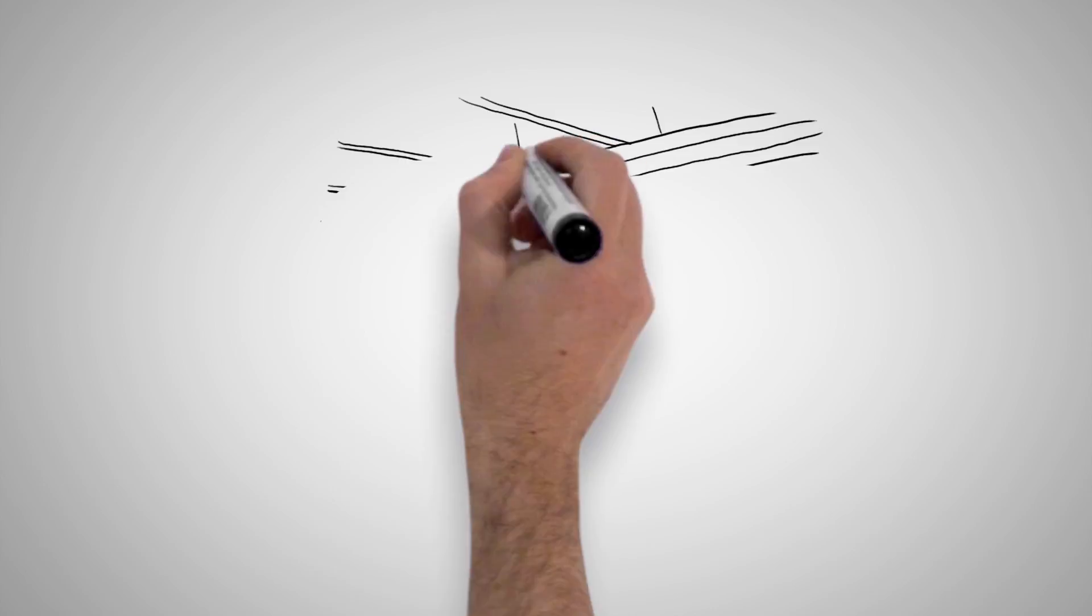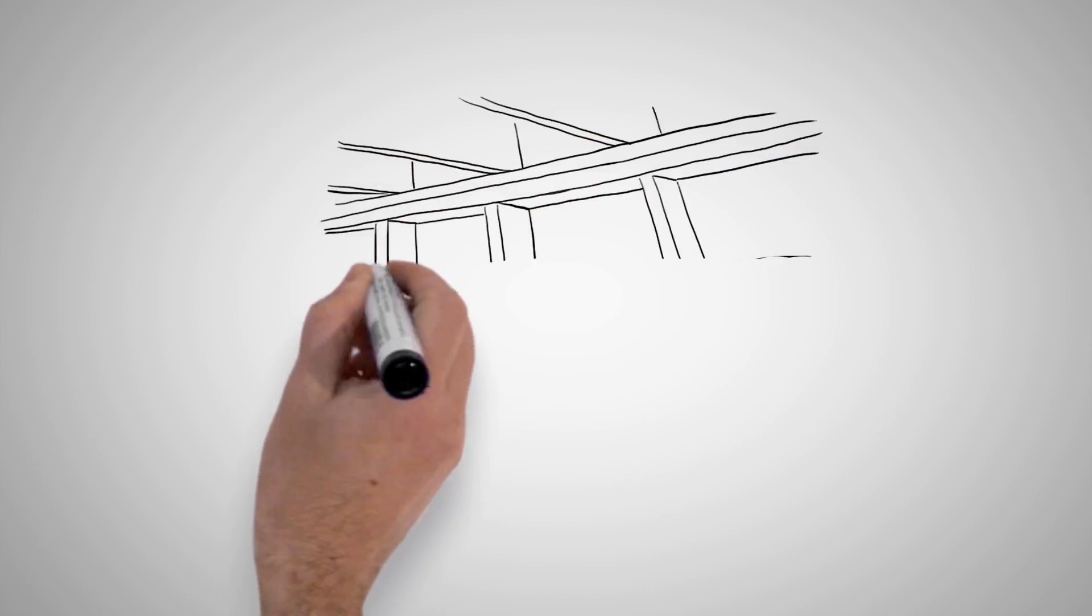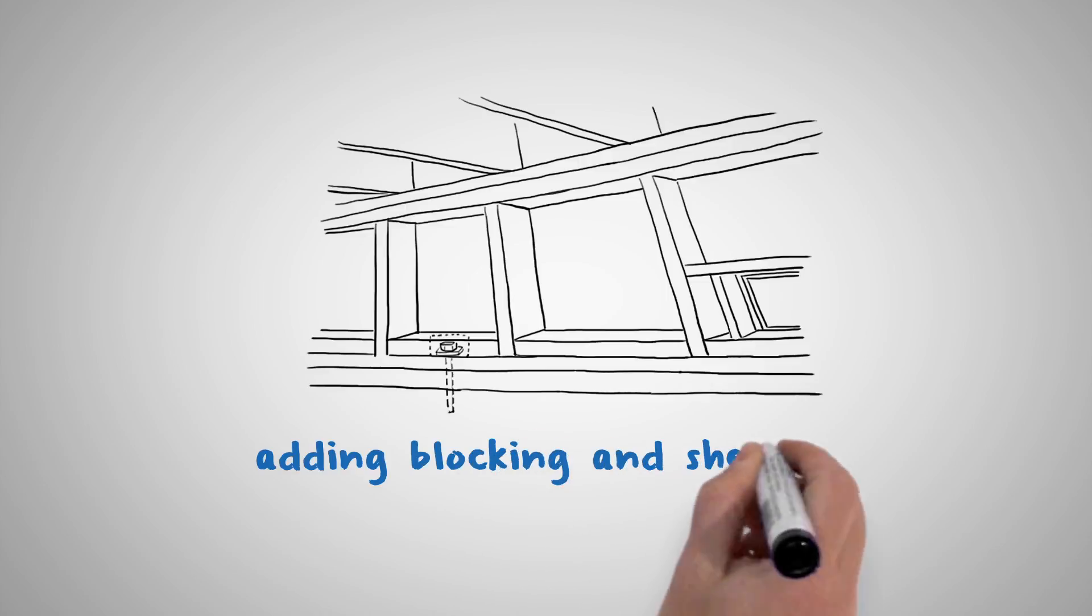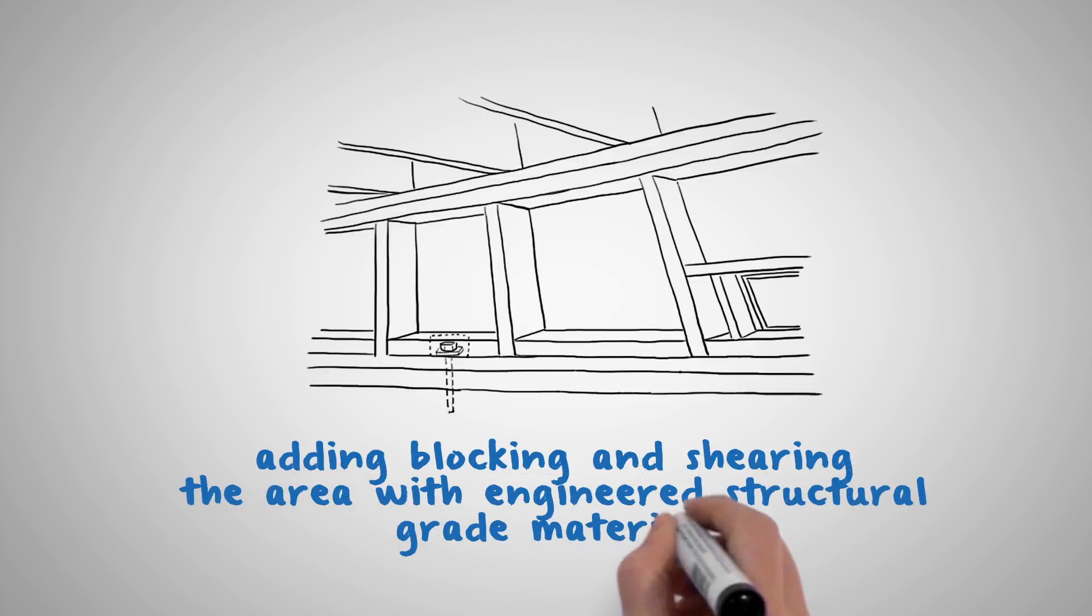Then, for houses with cripple walls on their foundation's perimeter, the wood-framed foundation is braced by adding new blocking and shearing the area with engineered structural-grade materials.